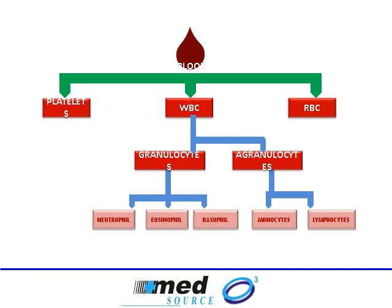Let's understand the various components of blood, especially the blood cells. Broadly speaking, blood cells are of three types: platelets, which are very small; RBCs, which are bigger; and WBCs, which are the largest blood cells. WBCs are white blood cells and RBCs are red blood cells.